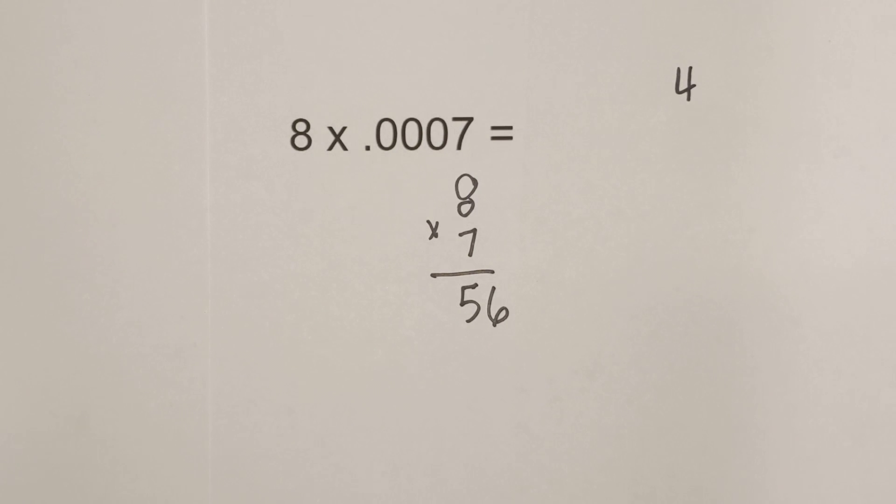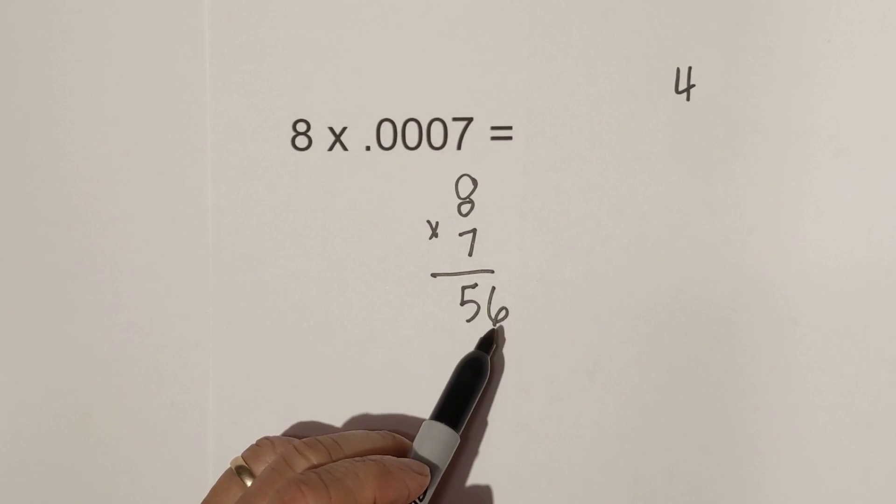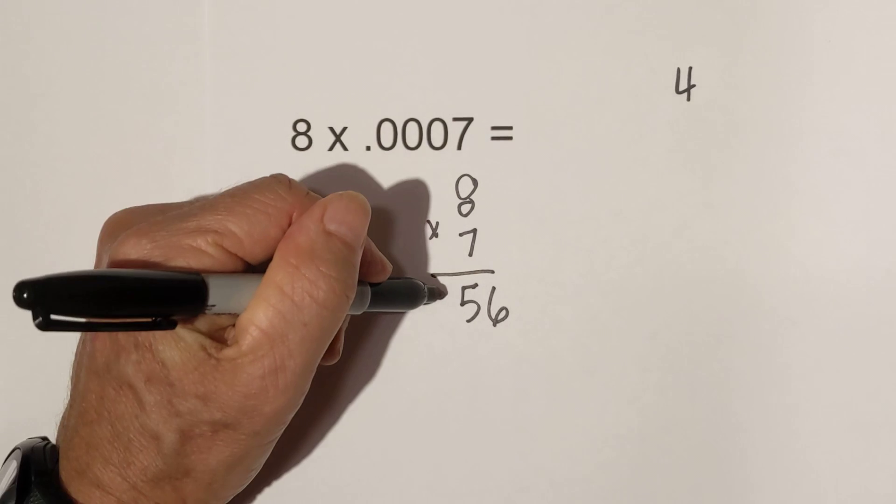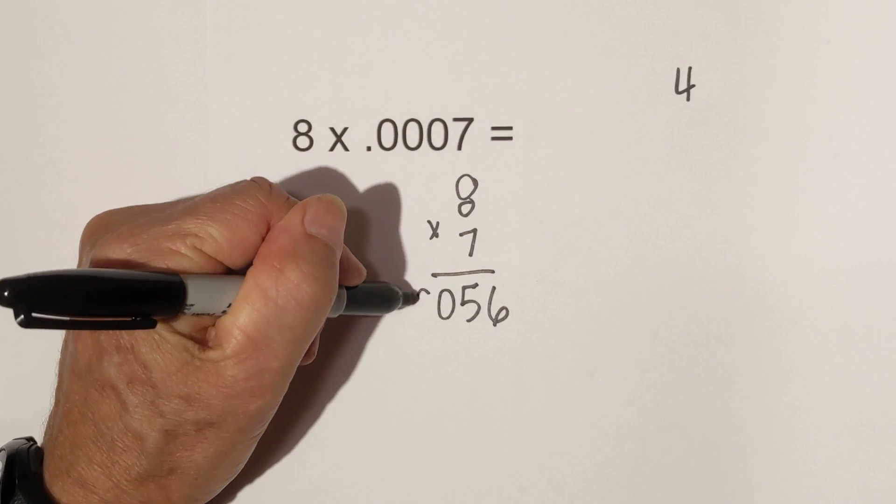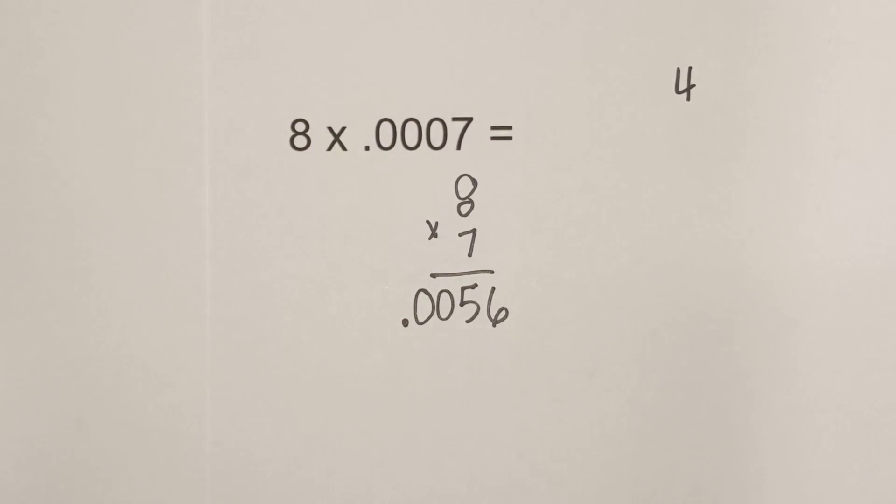So now we need four numbers to the right of the decimal. So we have 1, 2, 3, 4 right here is a decimal. So it is 56 ten thousandths. Okay,